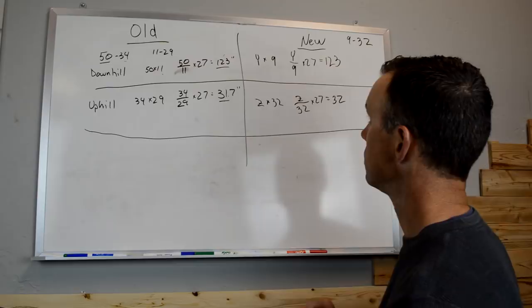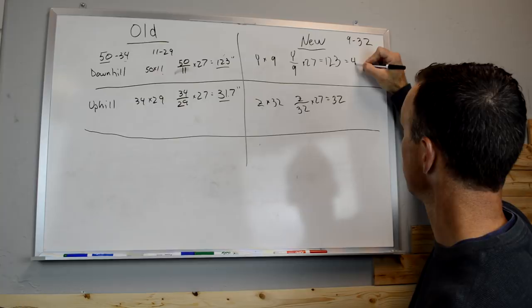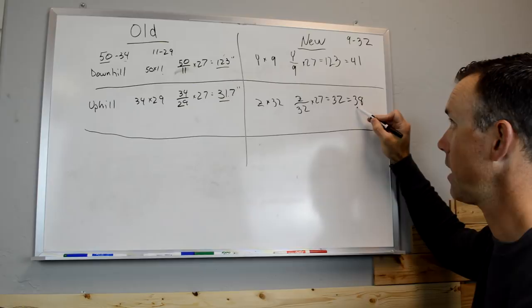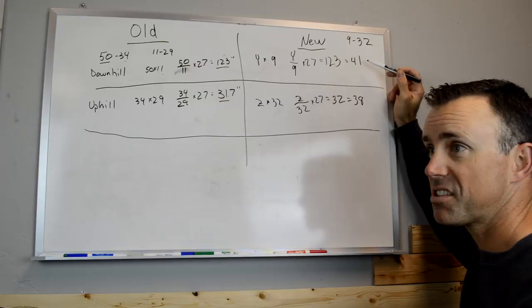So now we're just going to solve for Y and for Z and see where that gets us here. So on this one we get 41. On this one we get 38. So now in order to maintain his climbing or his uphill gear, we would need to have a 38 tooth front chainring. And to manage the same downhill gear we need a 41. This isn't too bad, we're actually not too far apart.